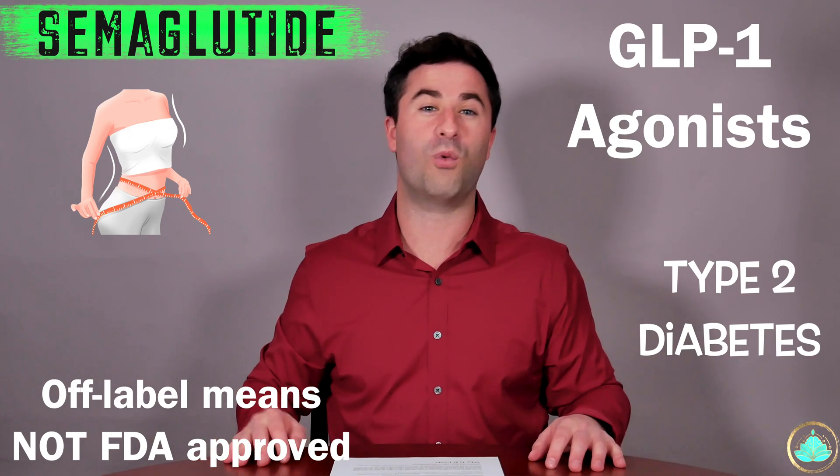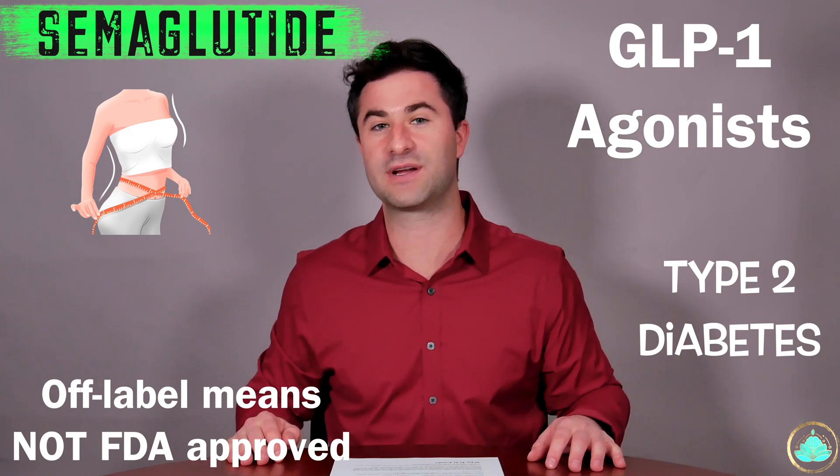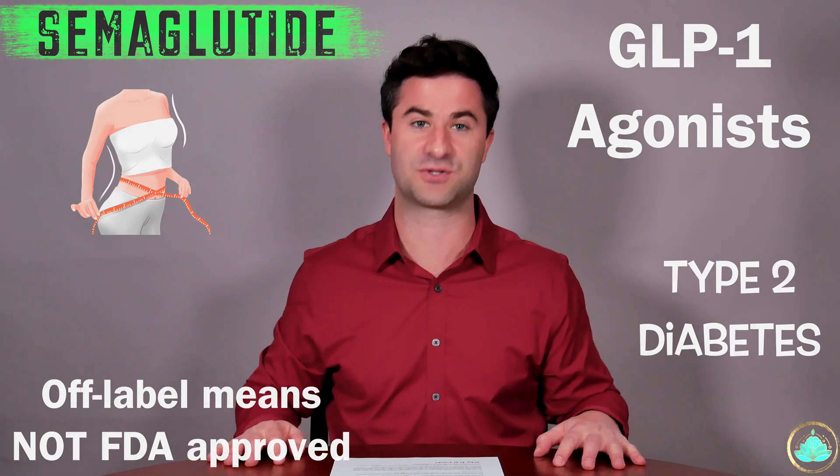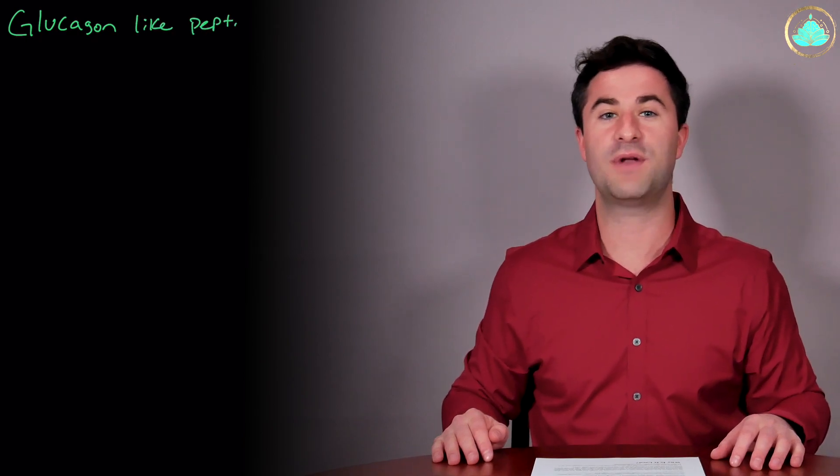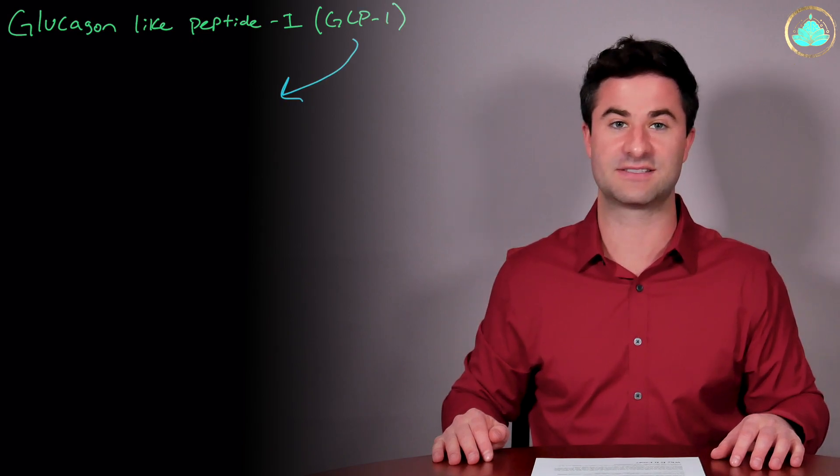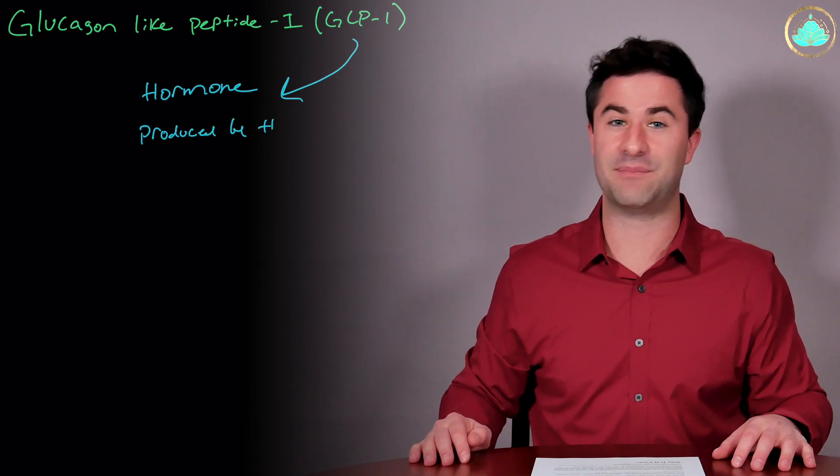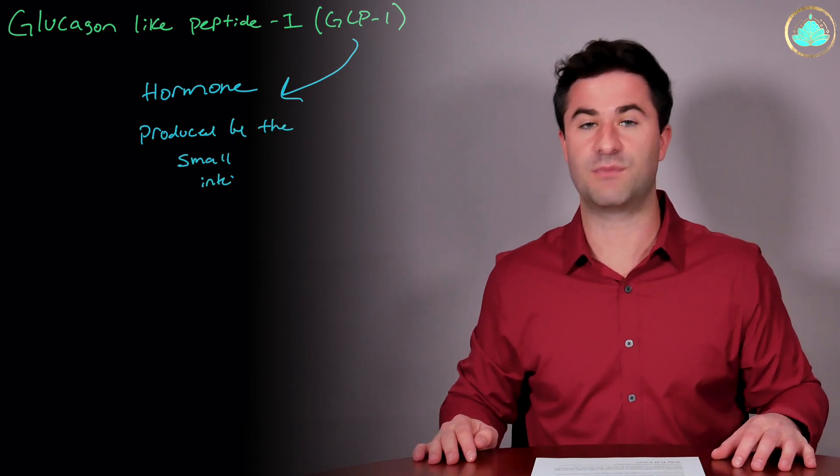In order to understand why this medication has been so popular as of late, I think it's worth exploring a little bit of how Ozempic actually works. Like I mentioned before, Ozempic is in a class of diabetic medications known as glucagon-like peptide 1 or GLP-1 agonists. GLP-1 is a hormone, a naturally occurring substance in the body, that is produced in the small intestine.